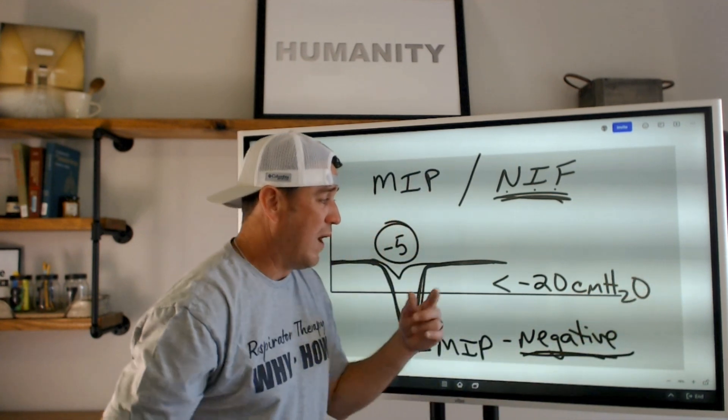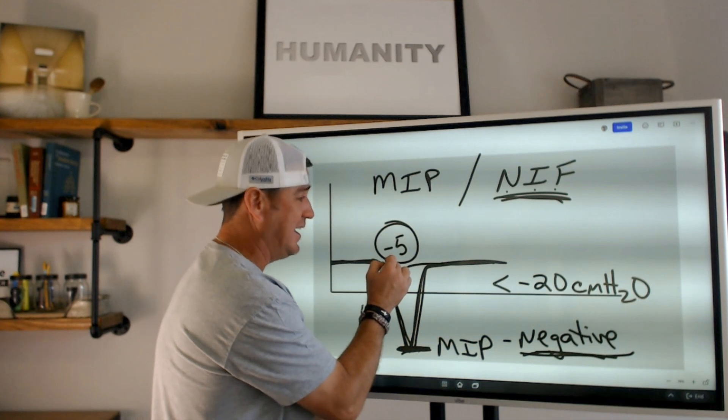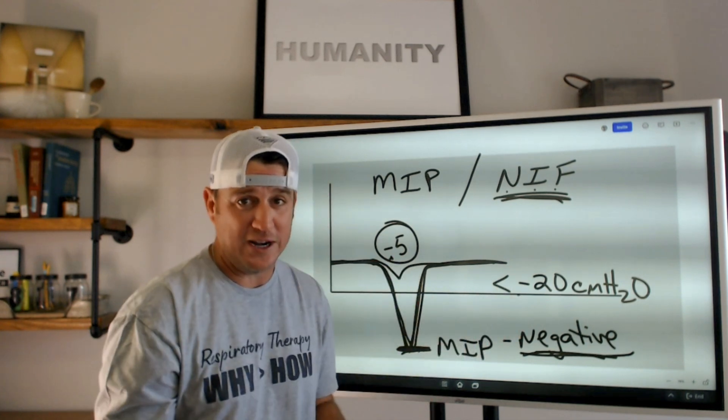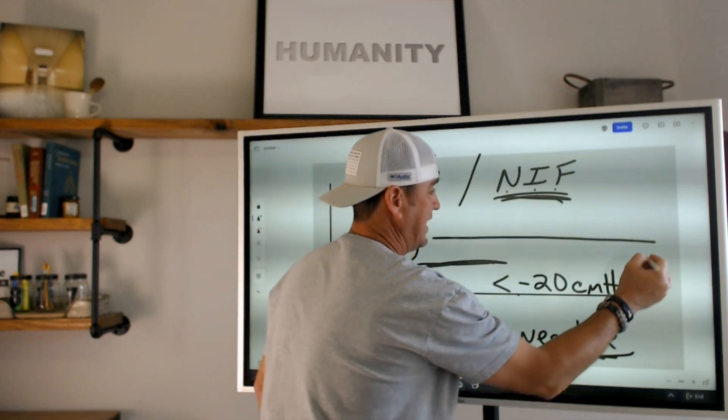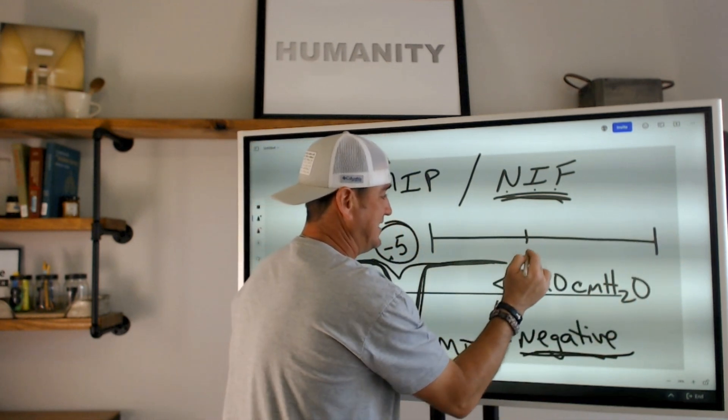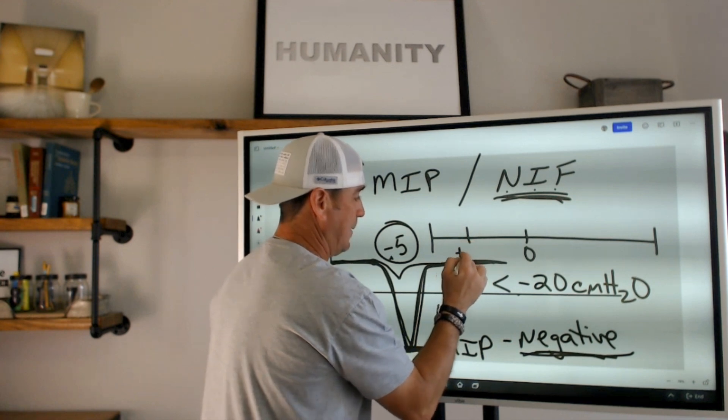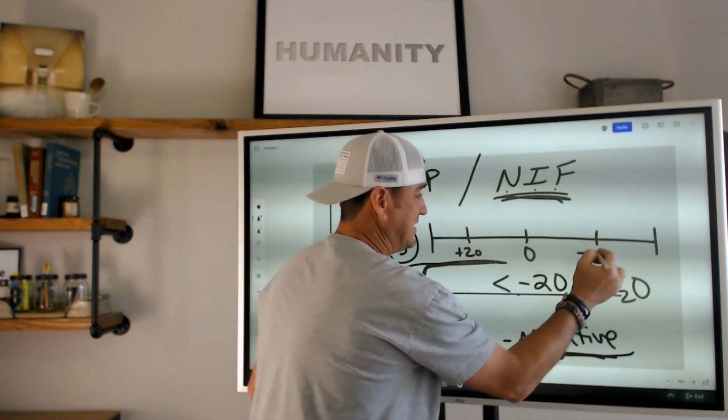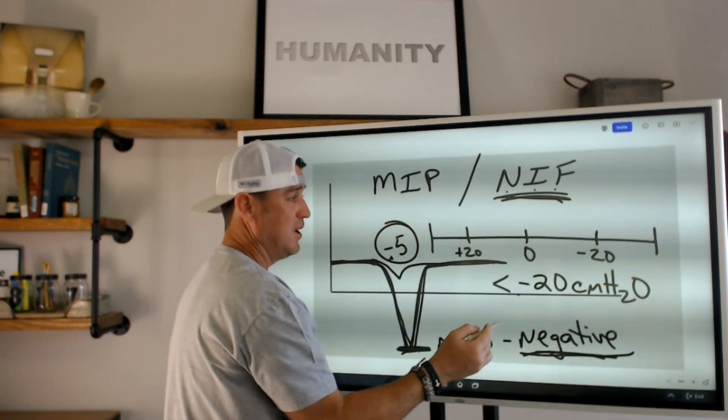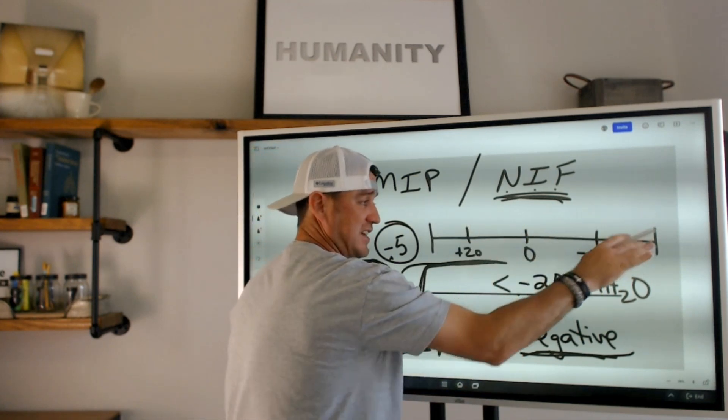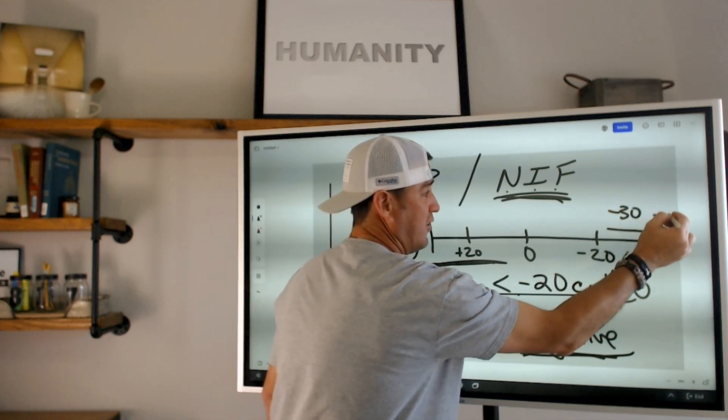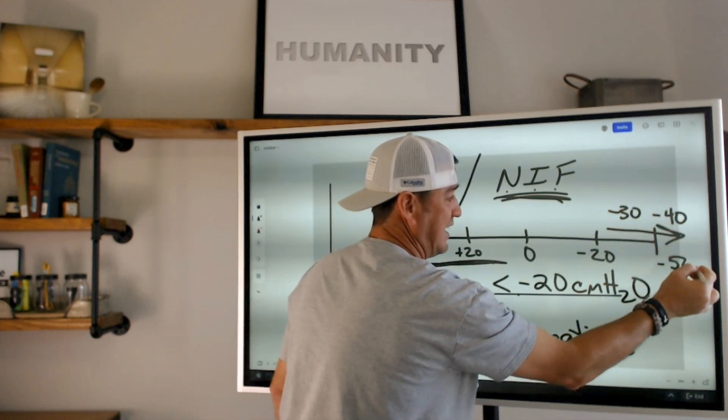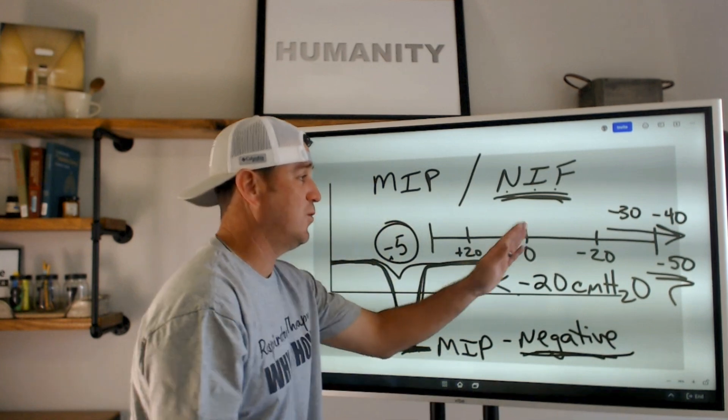Now, why did I say less? Because negative five was bad. Isn't that less than negative 20? Well, not when you put it on a spectrum. You see, if we could draw a timeline here and this is zero and this is plus 20 and this is negative 20, well, anything more negative than negative 20 is less. So we want negative 30, negative 40, negative 50. That's what we want.